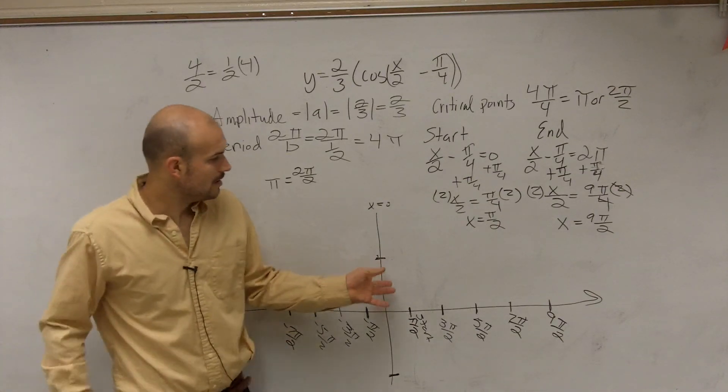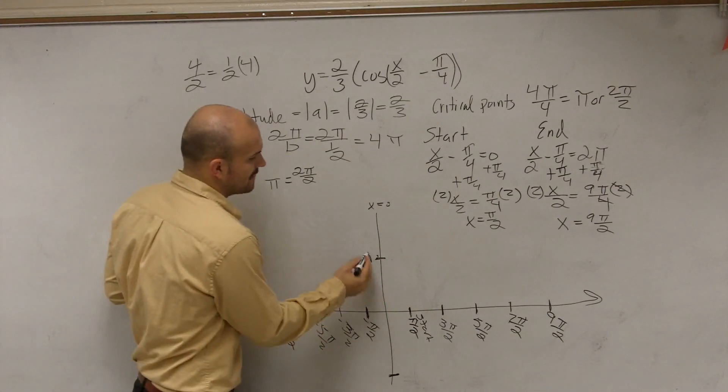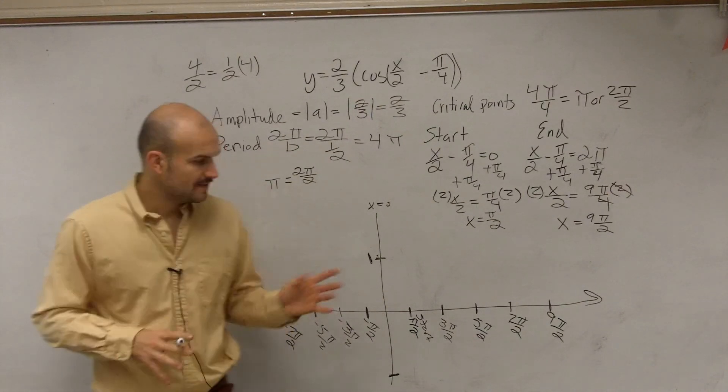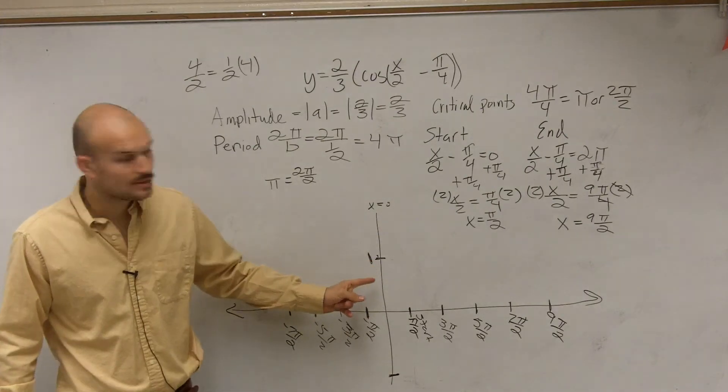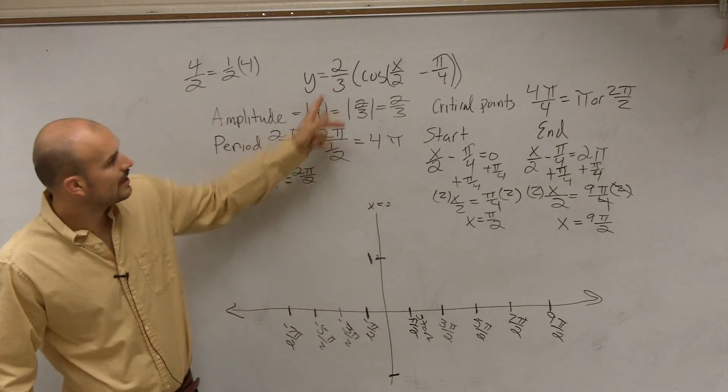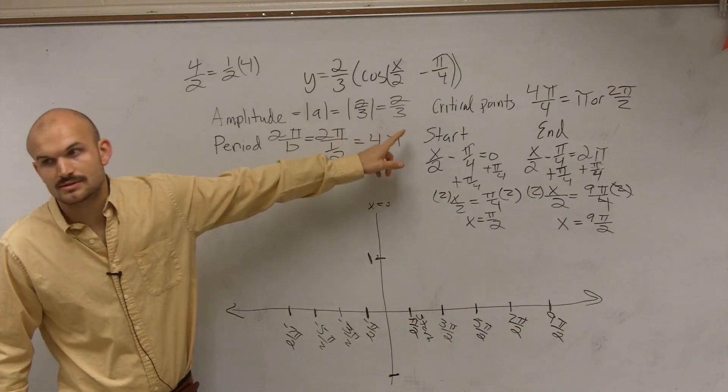The cosine, the parent graph of cosine, the amplitude was 1. The same thing for the sine graph as well. They both have amplitudes of 1. So you're going to go up to 1. However, in this one, our amplitude is not 1. It's 2 thirds.